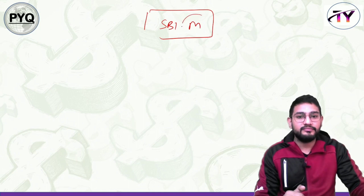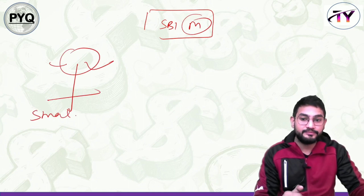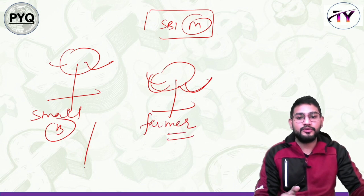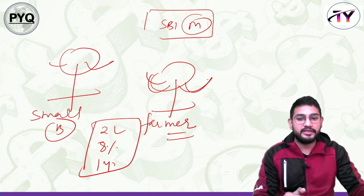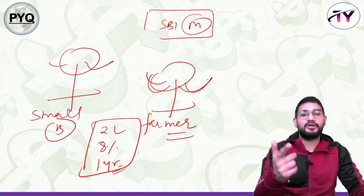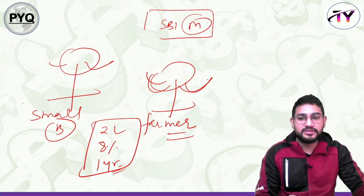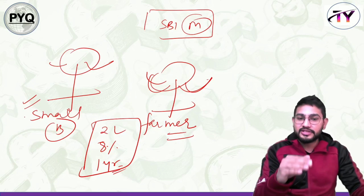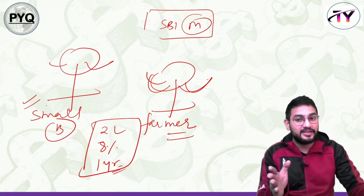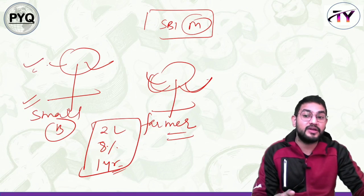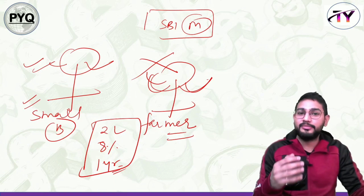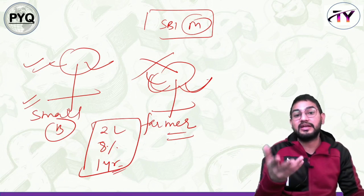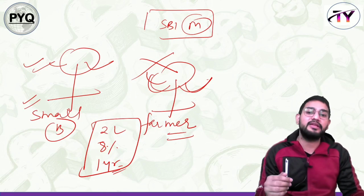Consider another scenario: you are an SBI manager, and two people approach — one is a small business owner, the other is a farmer. Both need ₹2,00,000 at 8% interest for one year. As a manager, whom would you lend to? The small businessman — because the farmer may default. If the farmer defaults, the bank's NPA increases. So the farmer doesn't get the loan, even though he needs it, and the economy suffers.